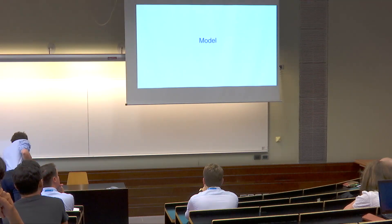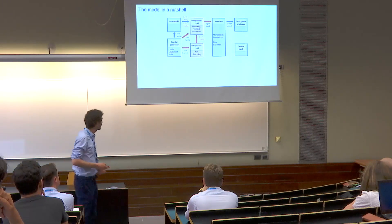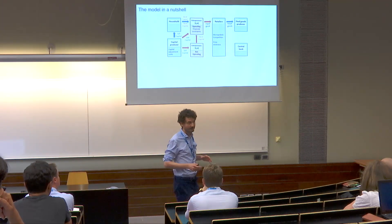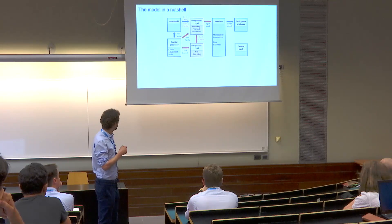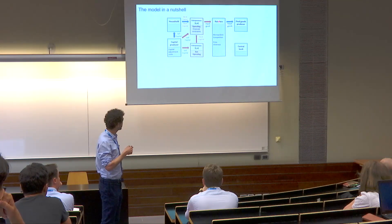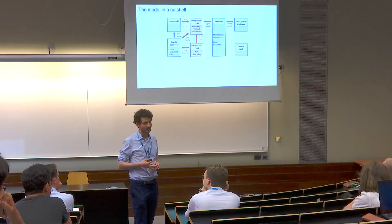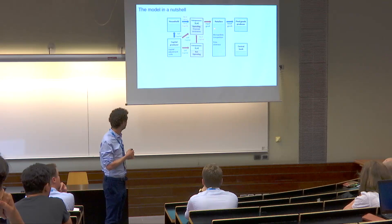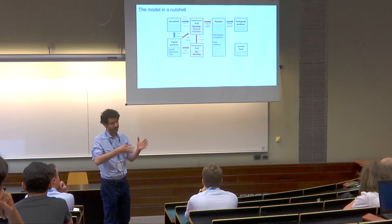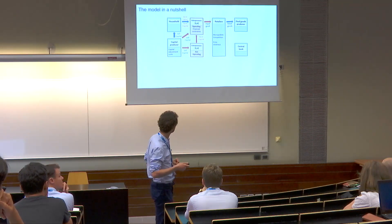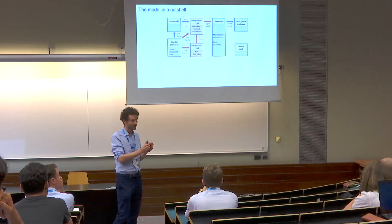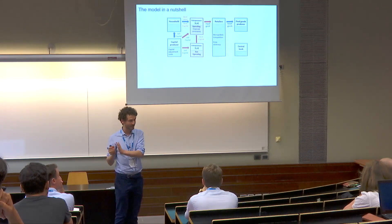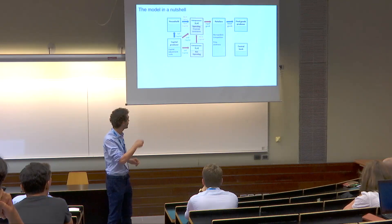Now a brief overview of the model. We took the standard New Keynesian model — the blue building blocks — with capital, which is the difference from the previous presentation. We have capital production, households, capital producers, retailers, final goods producers, and the central bank. We introduced an additional layer into the production network: splitting the firm heterogeneity dimension from the New Keynesian dimension by having two different types of firms, where the heterogeneous firm produces an input for the New Keynesian sticky-price firm.